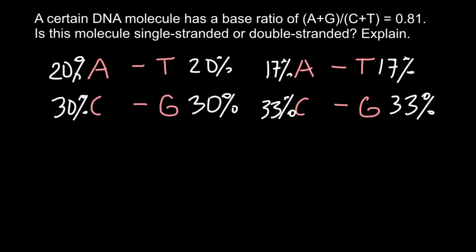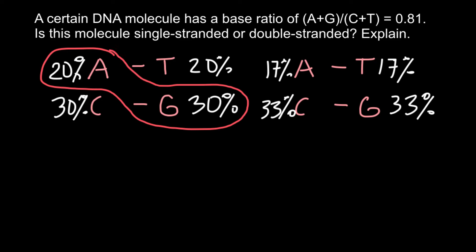Now let's return to our question. We are told that the ratio of adenine and guanine to cytosine and thymine is 0.81. In a double-stranded DNA, adenine and guanine together would give 50%, and cytosine and thymine together would also give 50%.